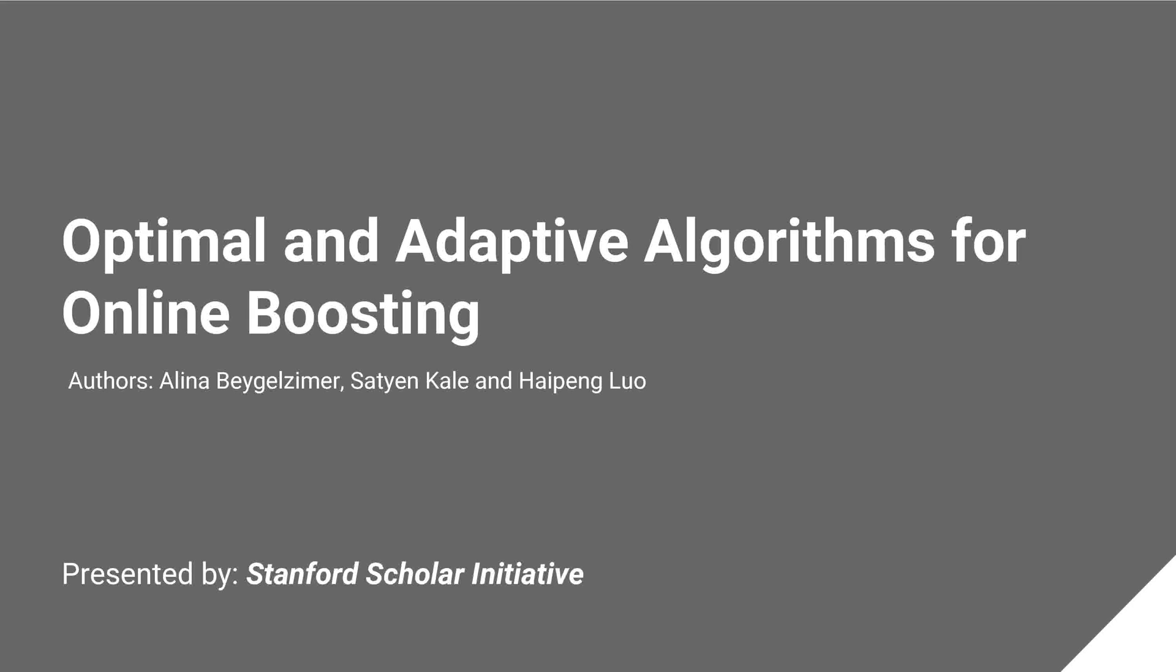In this talk, we, as members of Stanford Scholar Initiative, will explore machine learning algorithms for online boosting of weak online learning algorithms. This is done by proposing and designing optimal as well as adaptive algorithms that can handle weak learning algorithms according to their learnability by making them strong.